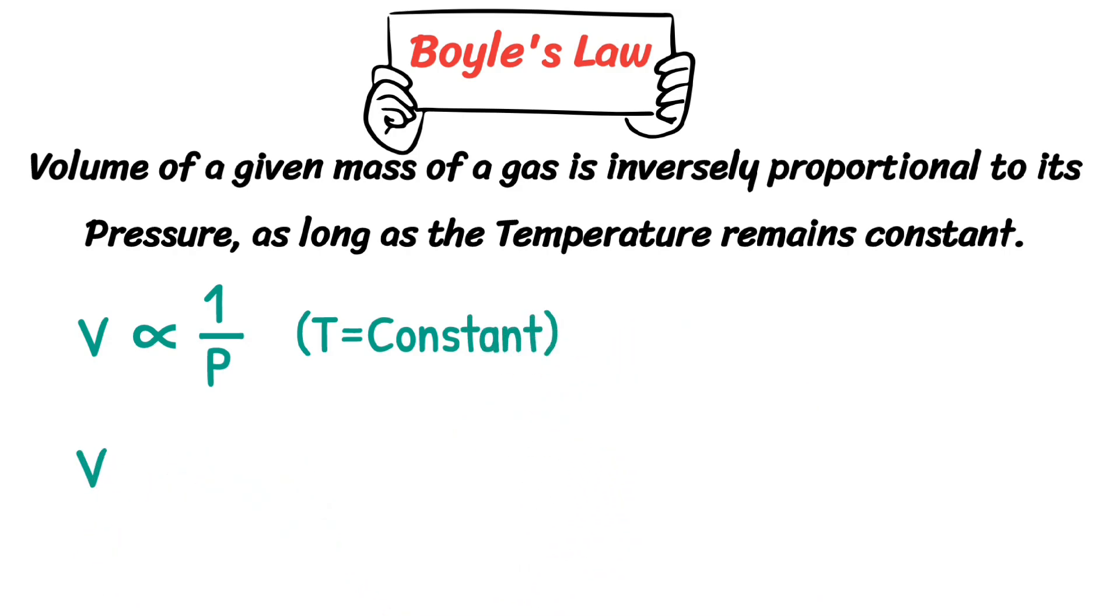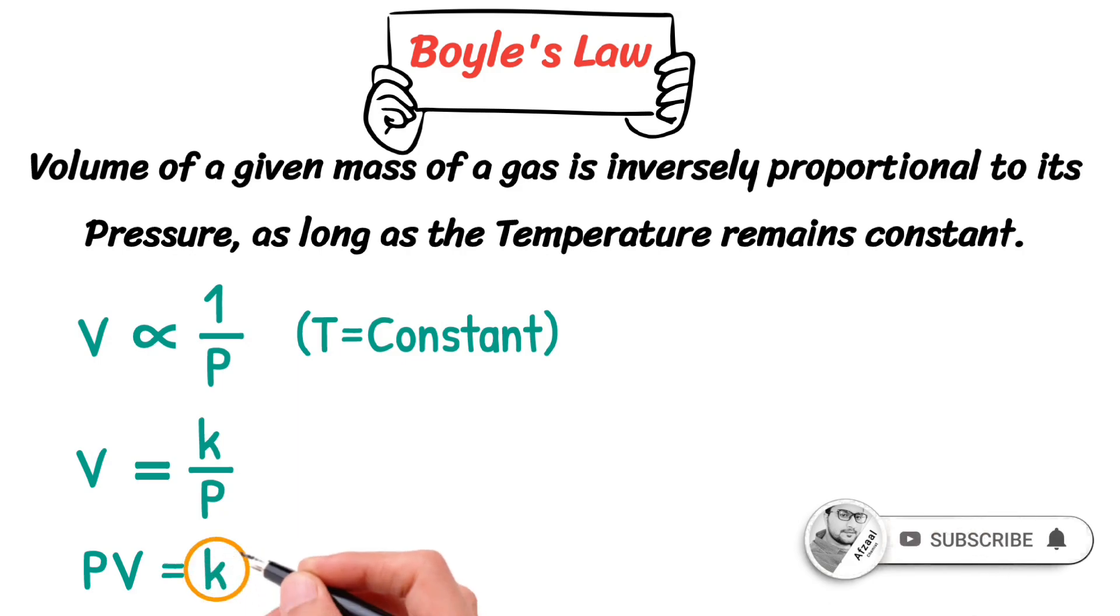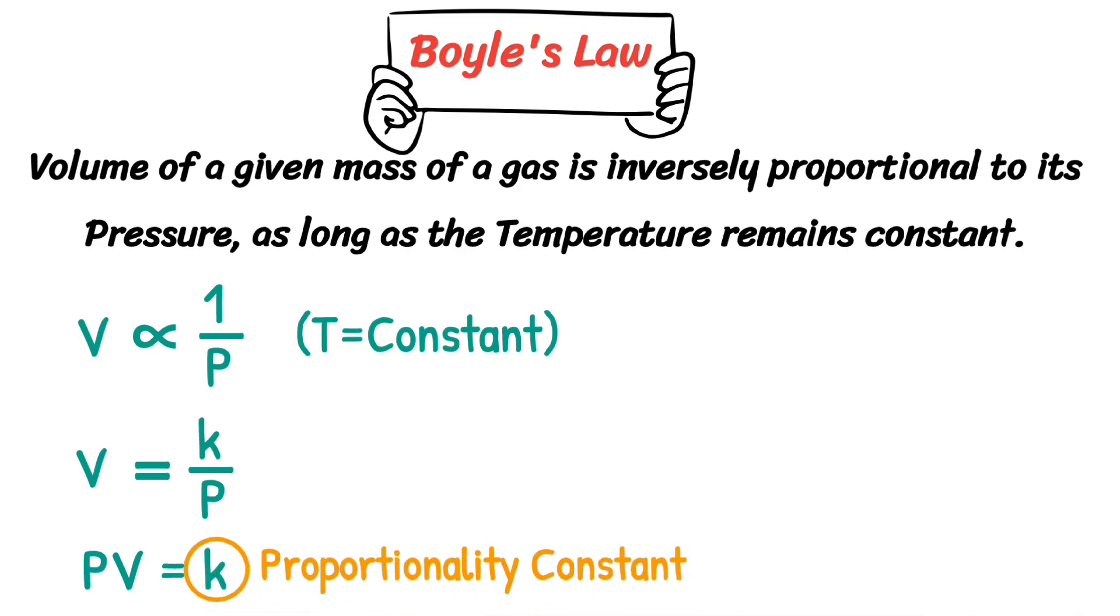To change the proportionality sign into an equal sign, we need to add a constant, which we'll call K. This equation can also be written as PV is equal to K. K is a proportionality constant. The value of K is the same for the same amount of a given gas.